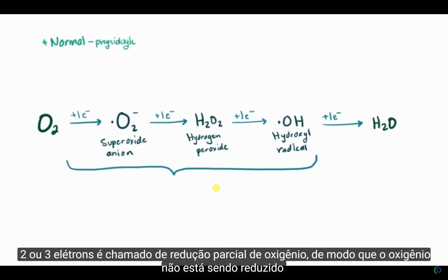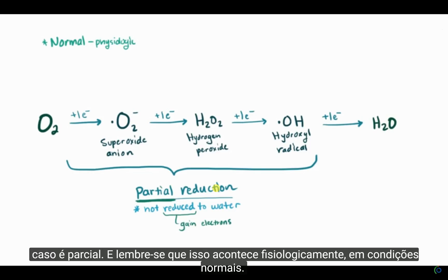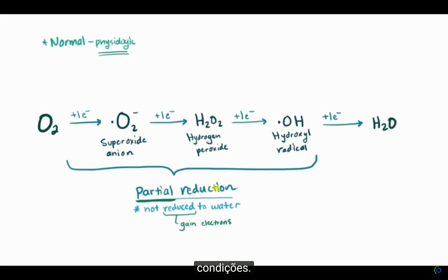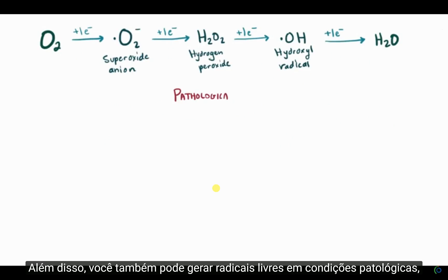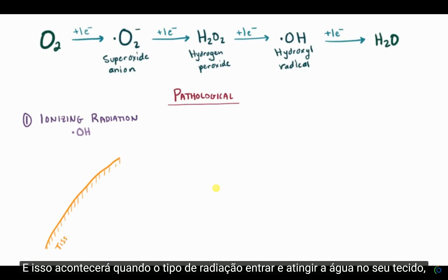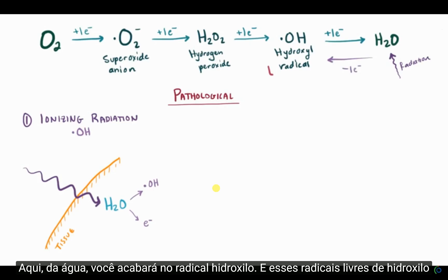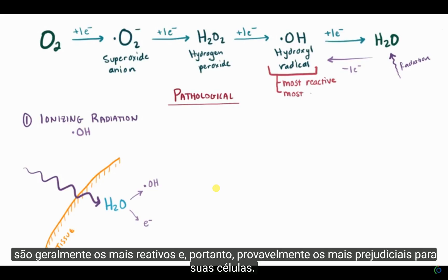So one, two, or three electrons is called a partial reduction of oxygen — oxygen isn't being reduced all the way to water, because reduction is a gain of electrons, so in this case it's only partial. This happens physiologically in normal conditions. But you can also generate free radicals in pathological conditions. One way is through ionizing radiation, which usually generates a hydroxyl radical. This happens when the radiation comes in and hits water in your tissue — it hits H2O and knocks off an electron, taking you back to the hydroxyl radical. These hydroxyl free radicals are generally the most reactive and therefore probably the most damaging to your cells.